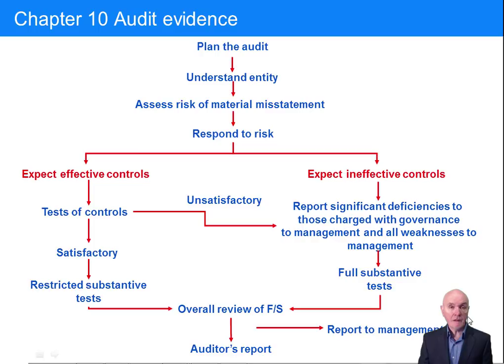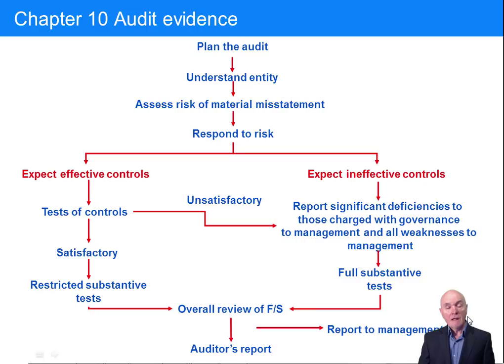We are collecting evidence, which is essentially to do with the detection risk. The more evidence you collect, the less chance that a material misstatement finds its way through into the published financial statements. There are two approaches to the audit. We can either go down the left-hand route, mainly relying on the client's internal controls to prevent, detect and correct errors — a very low control risk — or go down the right-hand route, where we do a lot of substantive work ourselves to verify the balances.